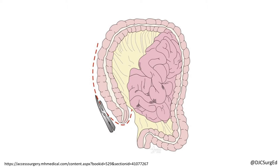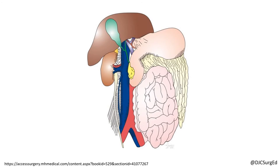The Cattell-Braasch maneuver is a right-sided medial visceral rotation. The right colon is mobilized by taking down the white line of Toldt, and the duodenum and head of the pancreas are mobilized with a Kocher maneuver. This exposes the right kidney and its vasculature, as well as the IVC and infrarenal aorta.